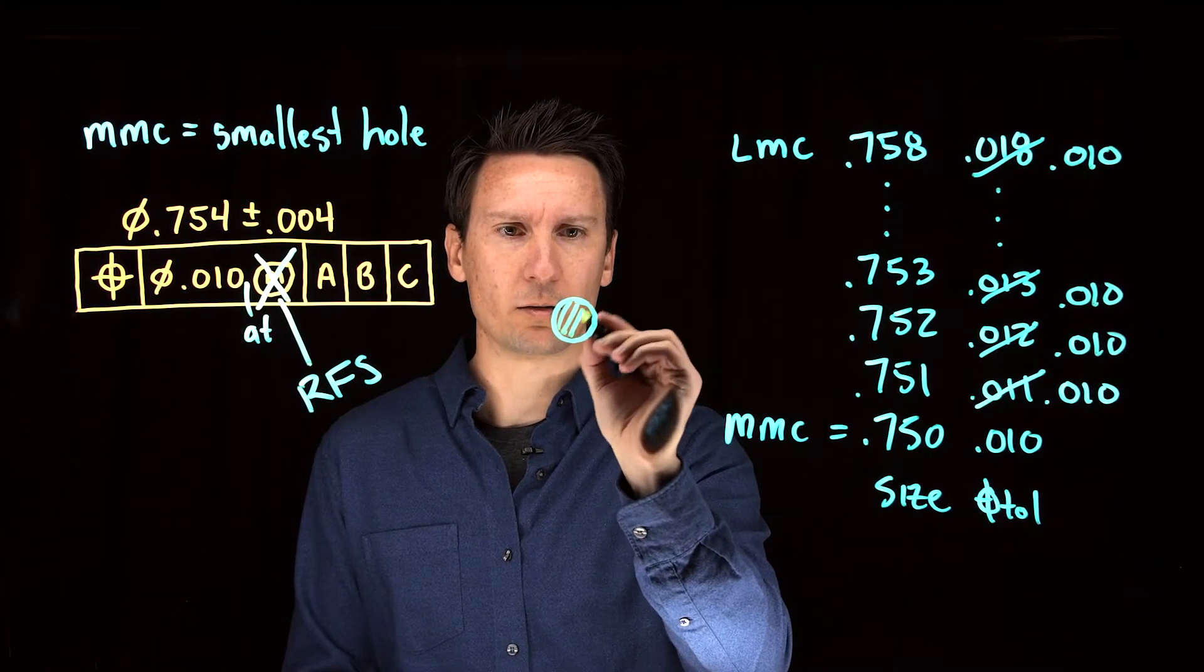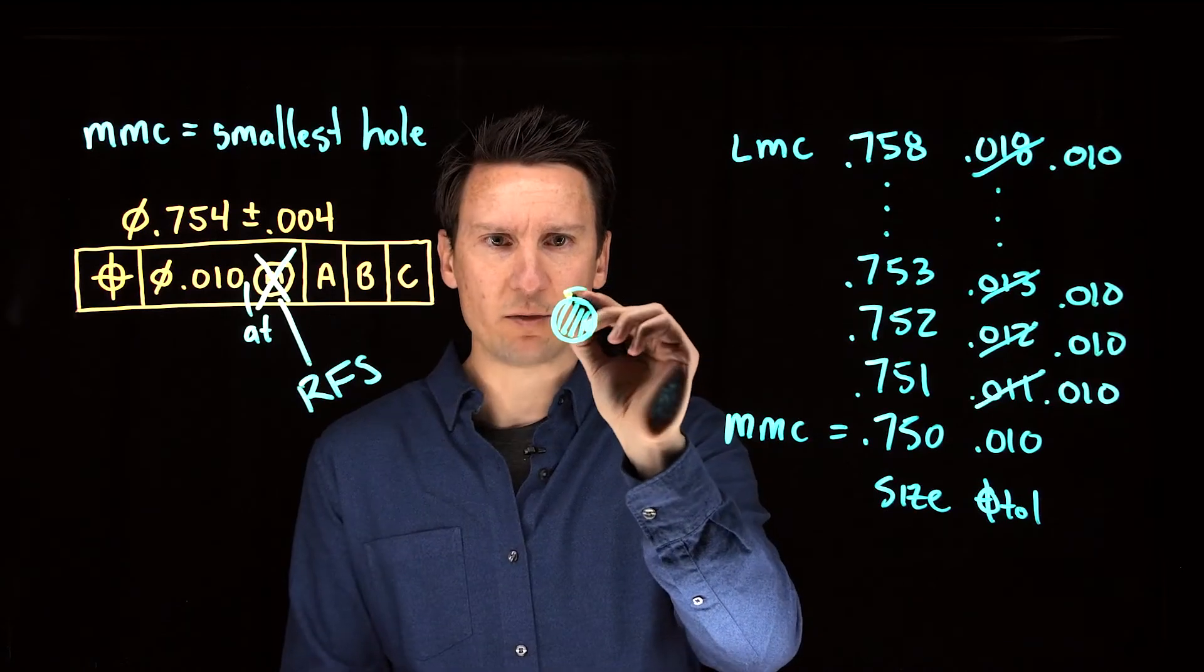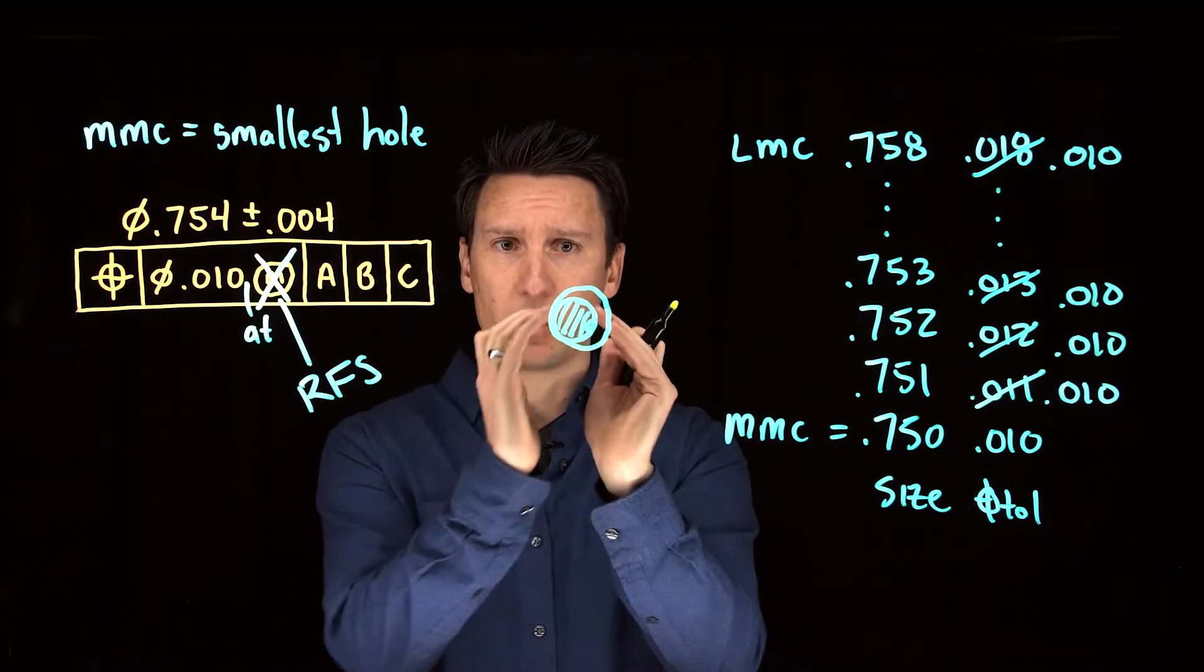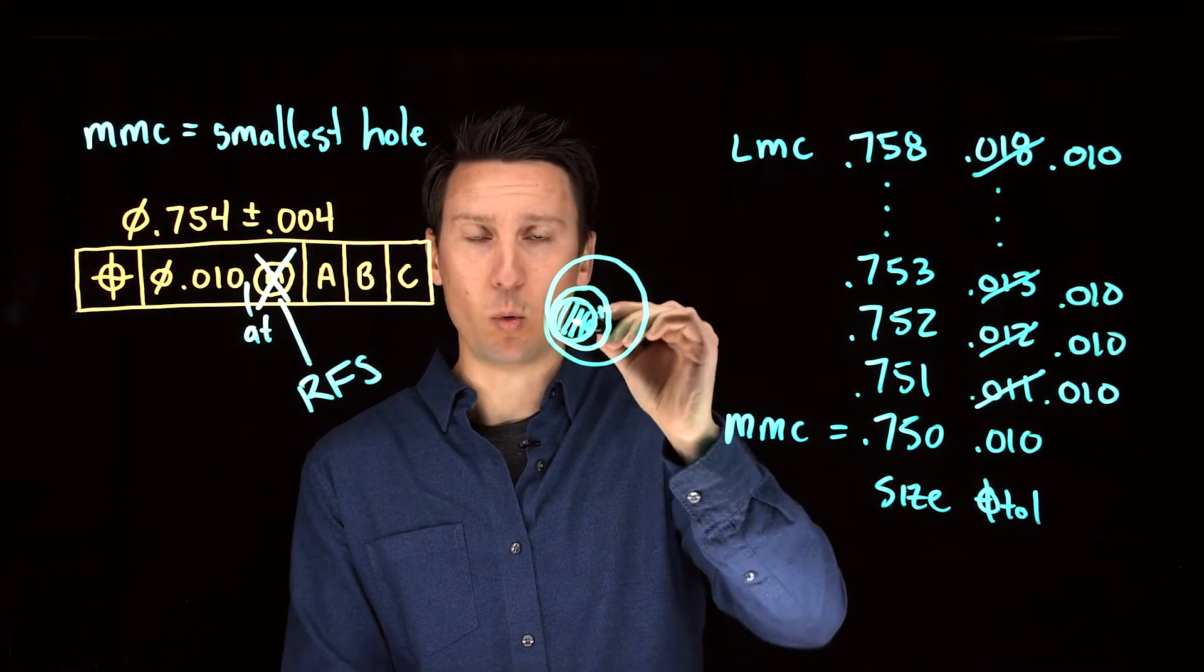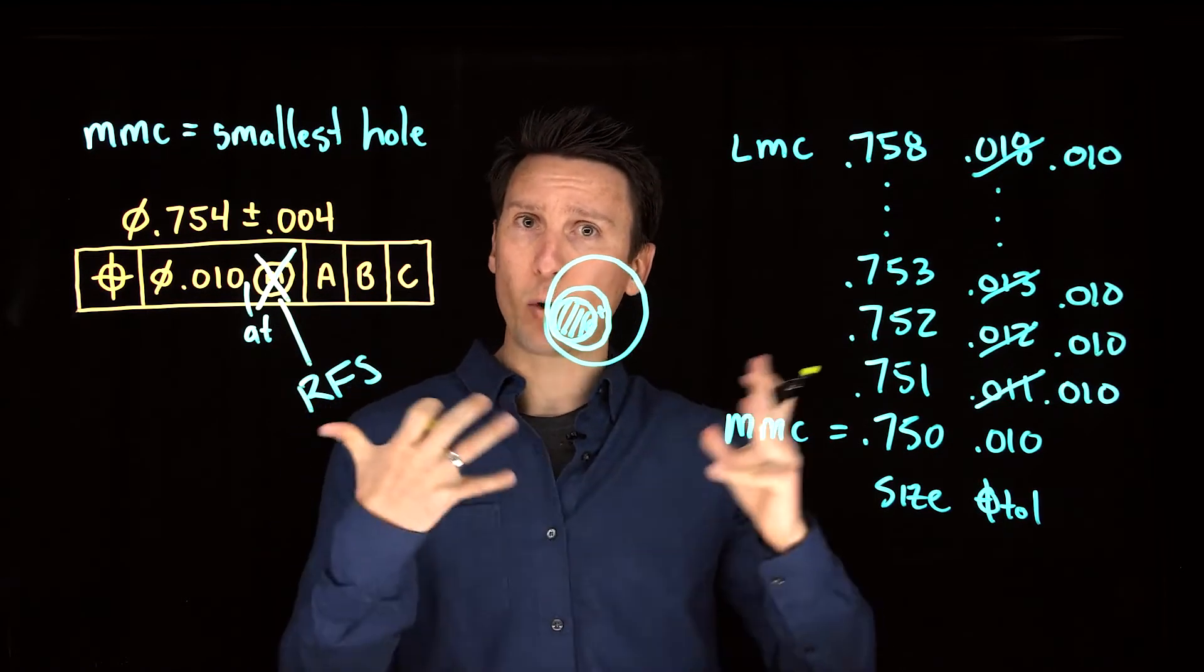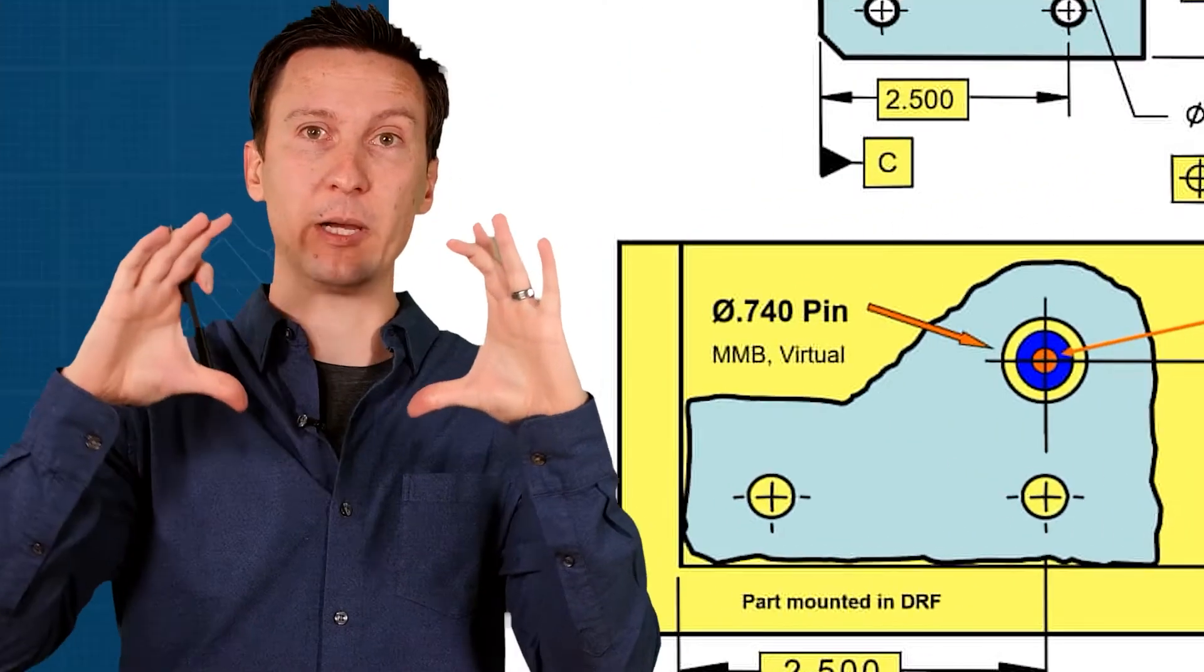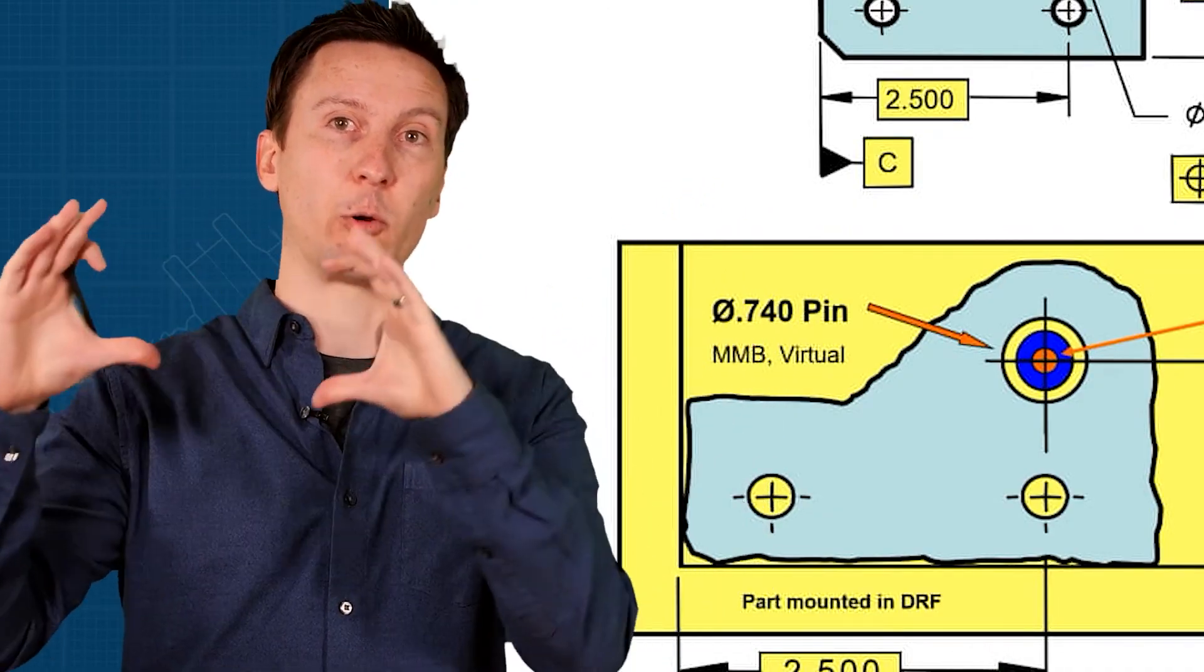The MMC modifier is pretty simple. You're trying to clear a pin. If you make the hole small in size, then you have to be very accurate on its location or you won't clear that pin. But if you make the hole bigger, then its center can be off more and still clear that mating piece. So the MMC modifier is a way to give more manufacturing tolerance in a direction that doesn't matter to your function. The bigger the hole, the more clearance between the pieces, and that's why we can give more position tolerance.